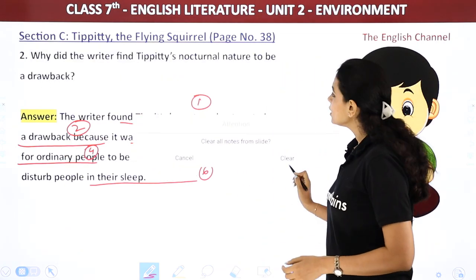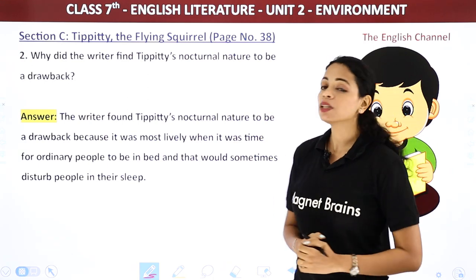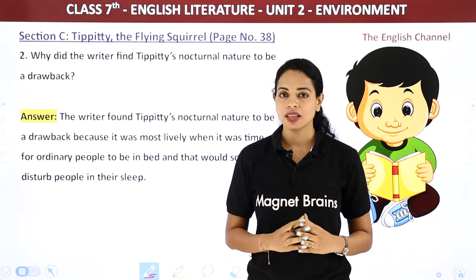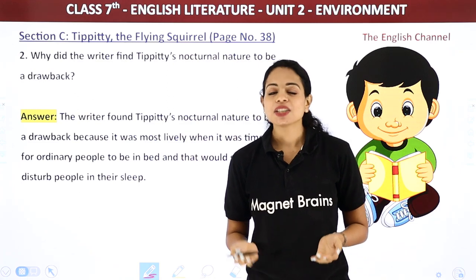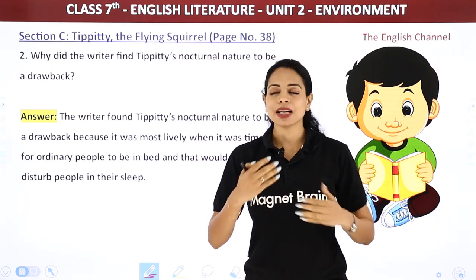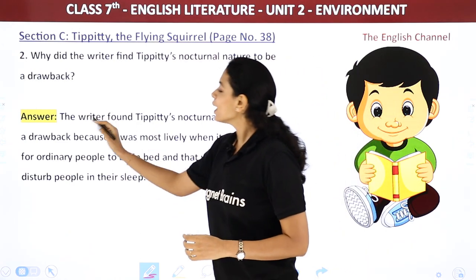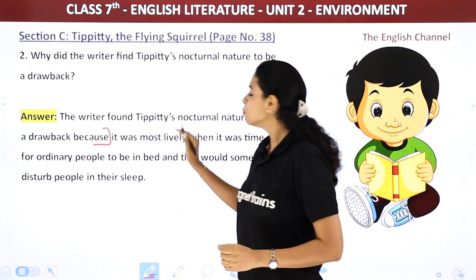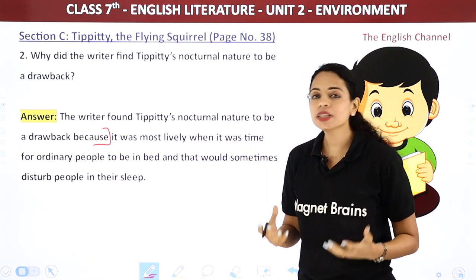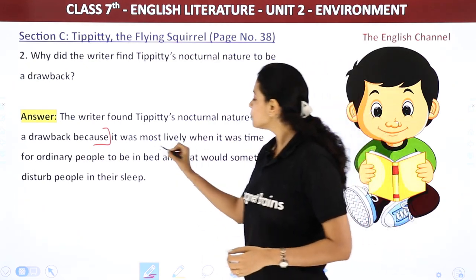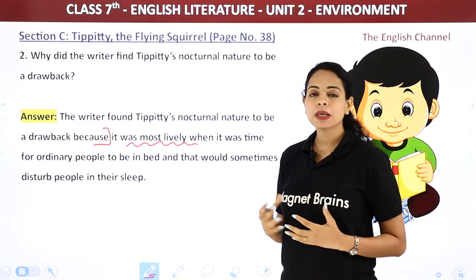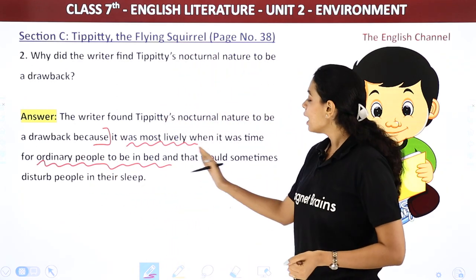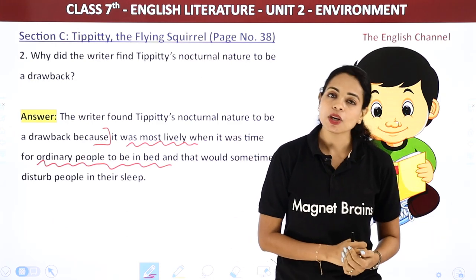Next question: Why did the writer find Tippity's nocturnal nature to be a drawback? The writer found Tippity's nocturnal nature to be a drawback because it was most lively when it was time for ordinary people to be in bed. This would sometimes disturb people in their sleep — the writer's sleep would get ruined because Tippity would gnaw and nibble all night.